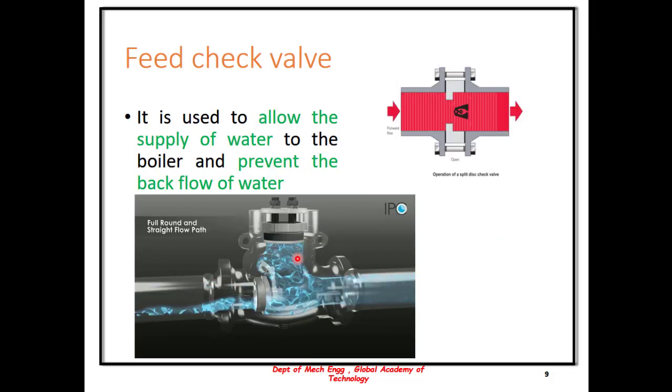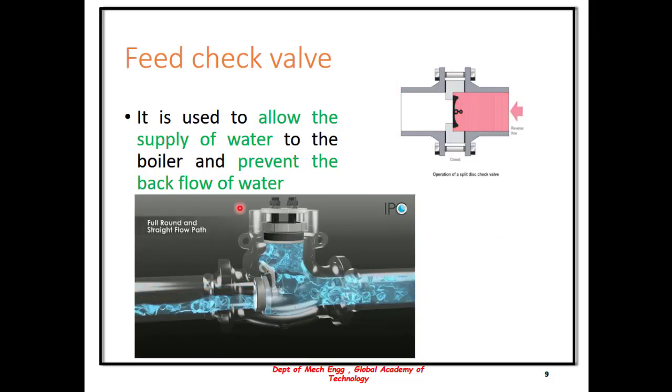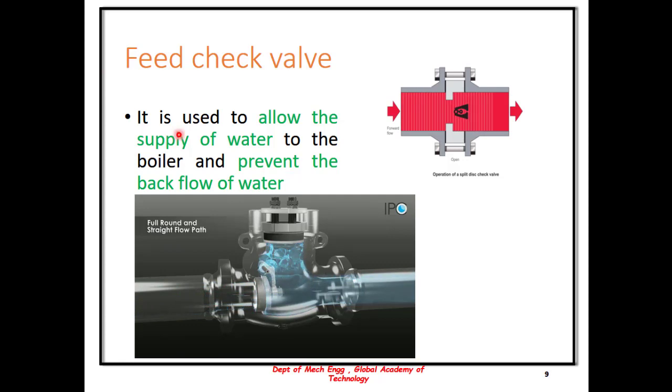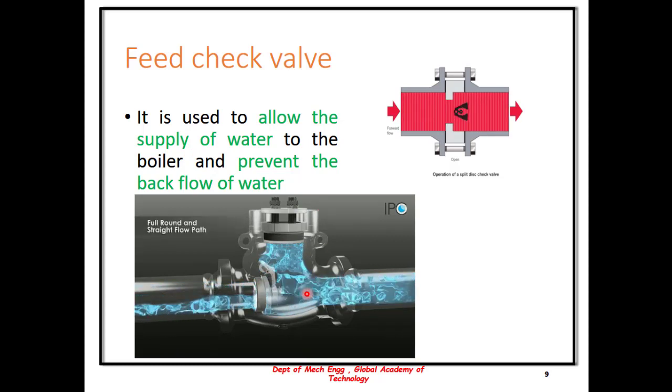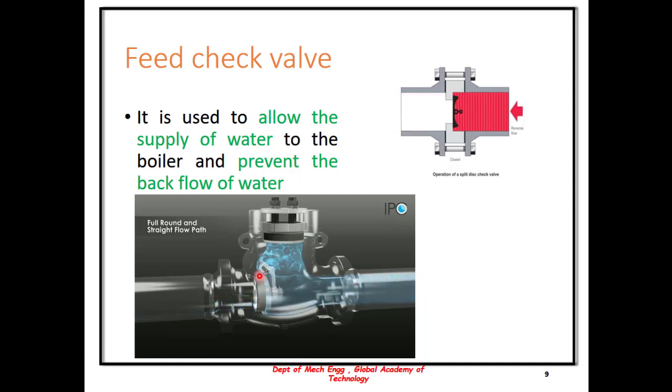Feed check valve is basically used to allow the supply of water to the boiler and prevent any backflow of the water. Whenever there is any change in the pressure difference, sometimes there is a tendency of the water to flow backwards. This is prevented by the feed check valve which ensures that the water is not moving back.